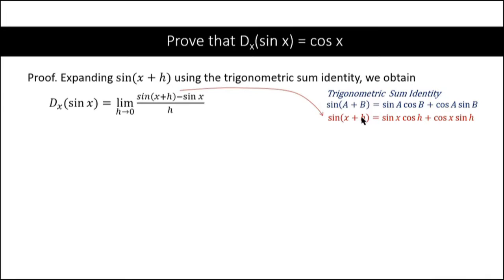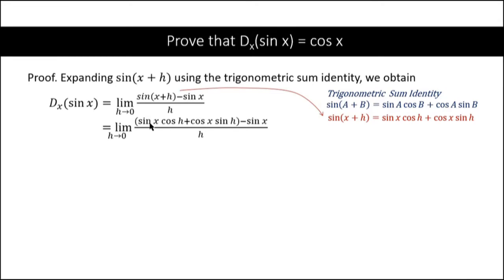We are going to substitute this into the definition of the derivative. So we now have the limit of the quantity: sine x cosine h plus cosine x sine h, minus sine x, all over h, where h approaches zero.